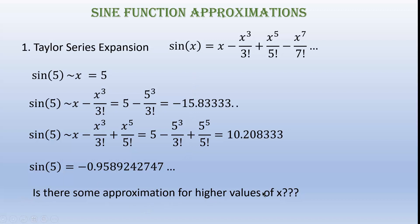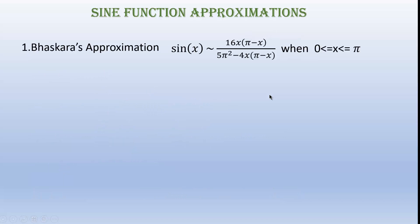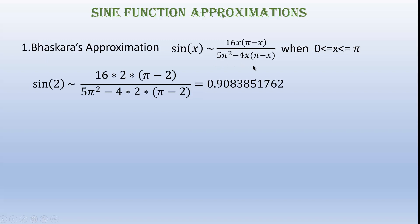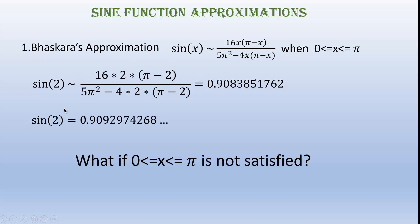So the question is: is there some approximation for higher values of x? The answer is yes — we do have that approximation and it's called Bhaskara's approximation. According to him, the approximation is given by this expression. It works whenever the x value is within 0 and pi. Let's check whenever x equals 2. We plug in 2 into this expression and get the result. The actual value of sine 2 is almost 0.909, and as we see, this approximation is almost near to that result.